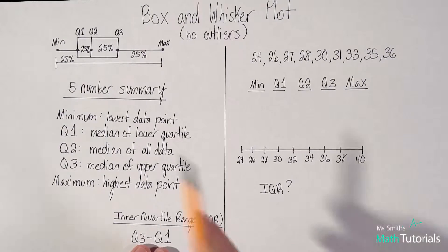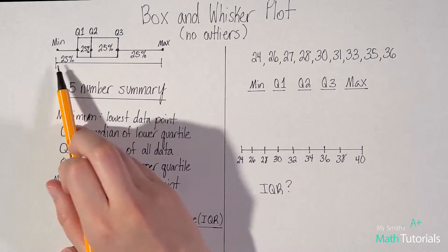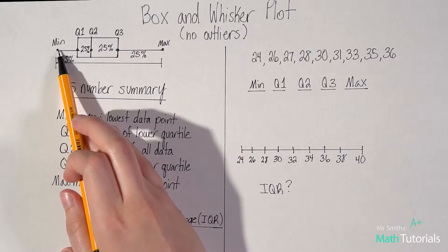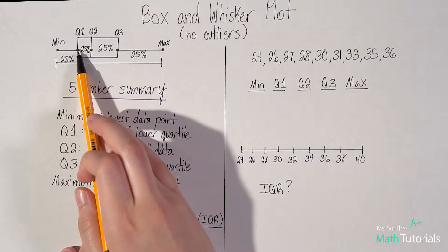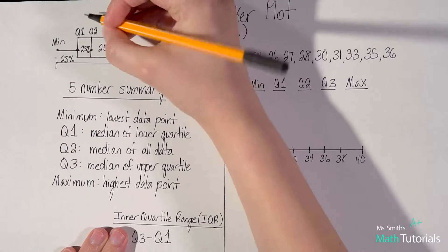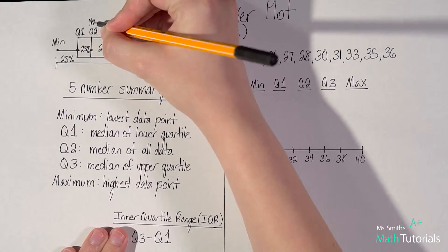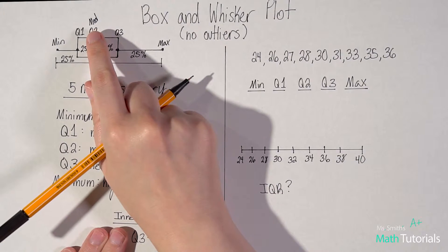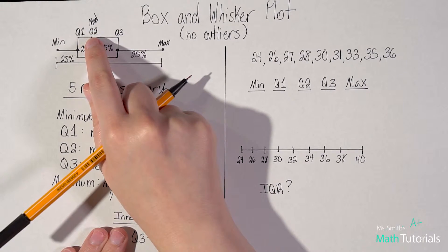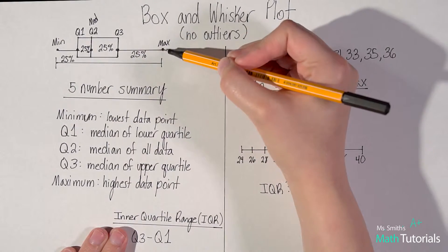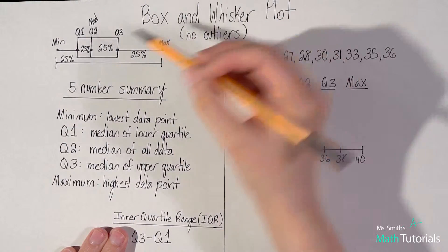In your box and whisker plot, it's made up of five points. You've got your minimum point, your Q1 point, your Q2 point — which is also known as your median. That's the median. So when we talked in the last video about finding median, that's your Q2.